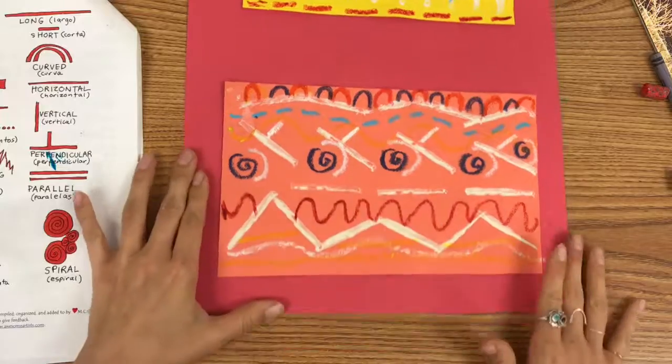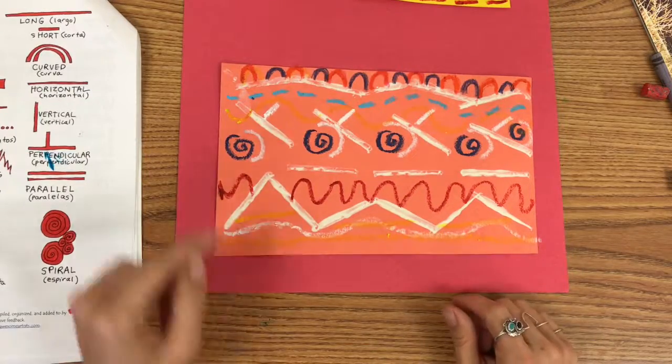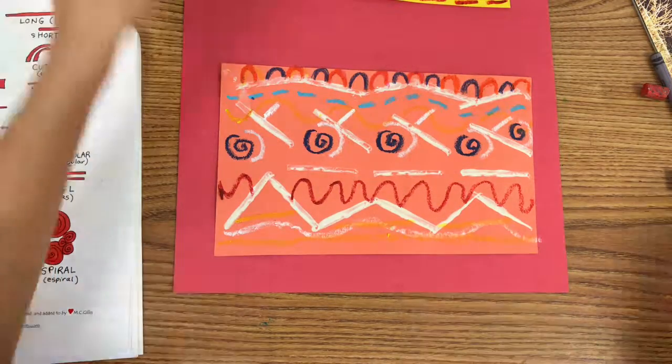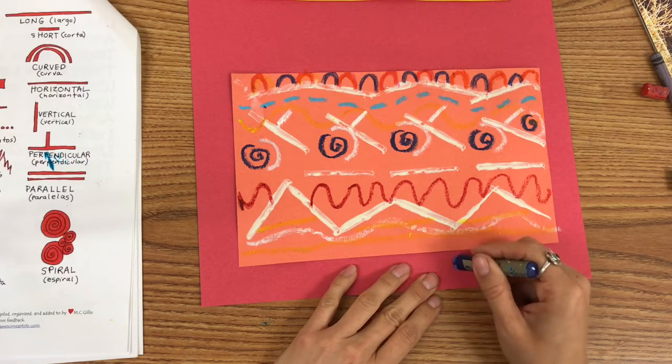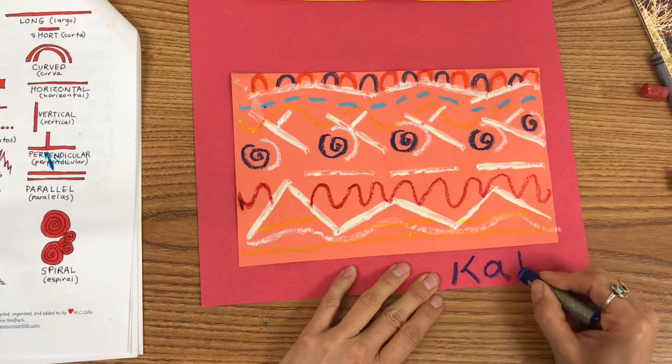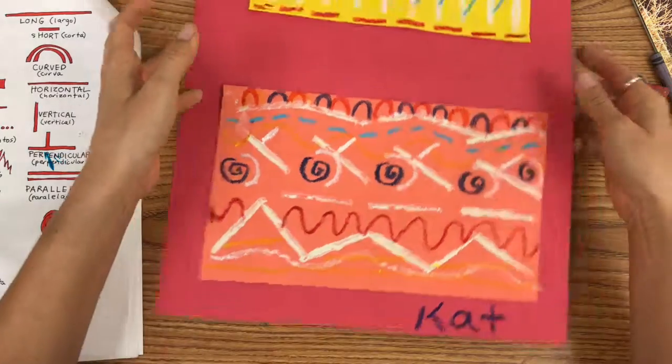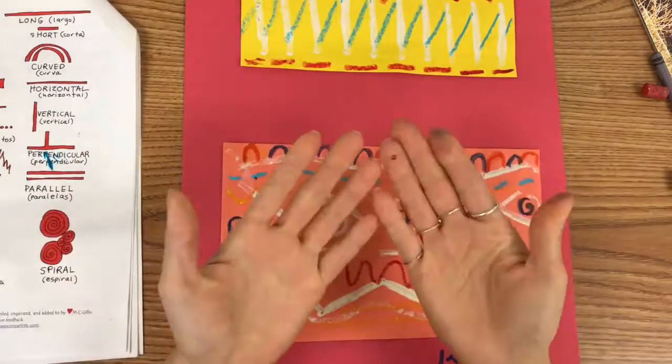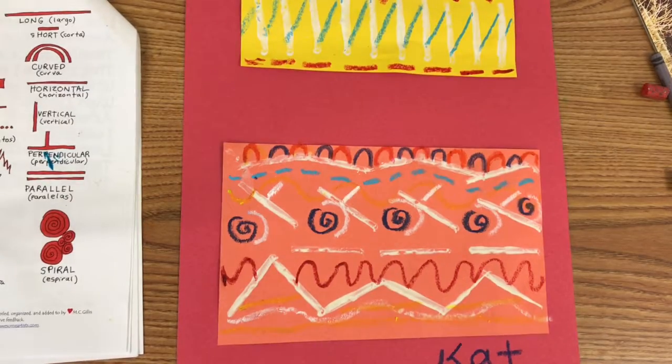All right. Used a lot of different lines. A variety of lines. And it's time for my artist signature. I'm going to write my name big and bold so my audience can see. Clean my hands.